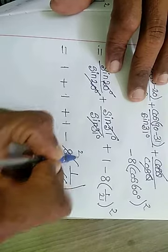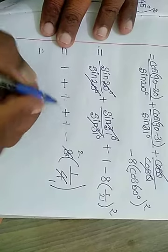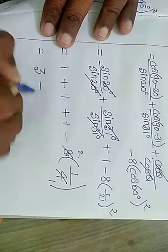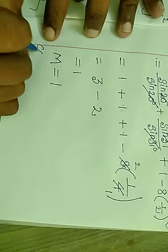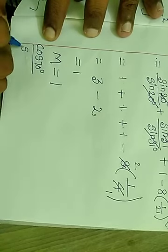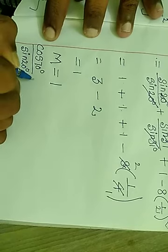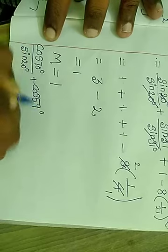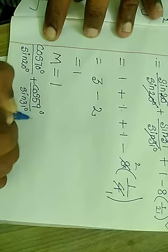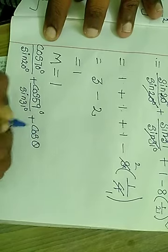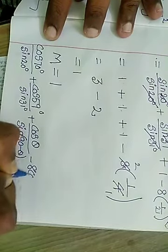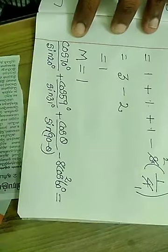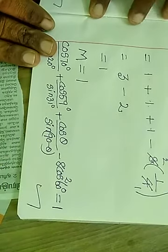1 plus 1 plus 1 gives 3, minus 2 equals 1. So M is equal to 1. The given question: cos 70°/sin 20° + cos 59°/sin 31° + cos θ/sin(90° minus θ) minus 8 cos square 60° equals 1. Finished, completed. Thank you, students.